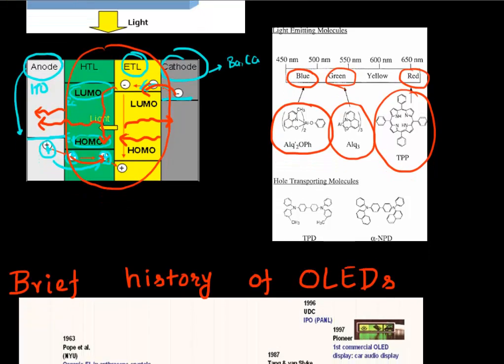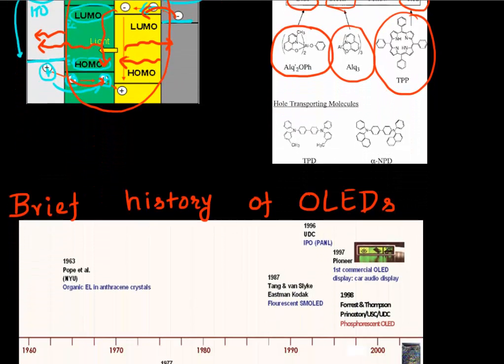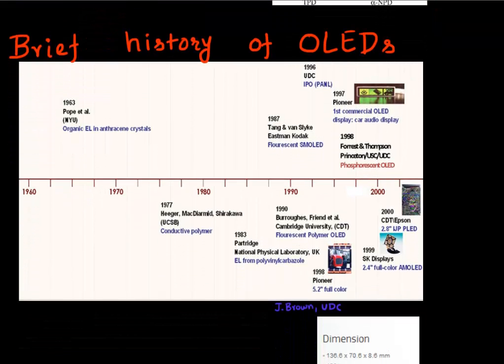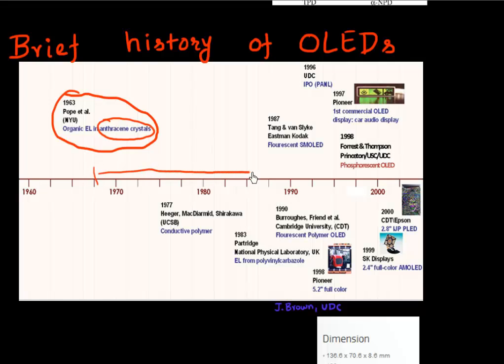This organic LED has been around for a while. It just took a long time for it to reach commercialization. But the basic phenomenon that these organic-based molecules can emit light was discovered by Mr. Pope at New York University all the way back in 1960. The first crystal they used to play around with were these anthracene crystals. When you apply a large amount of voltage on these crystals, they used to emit light.